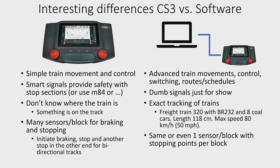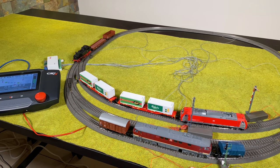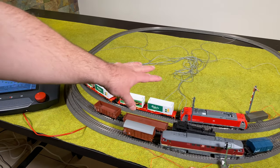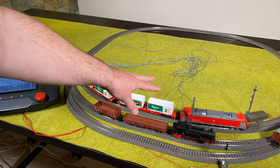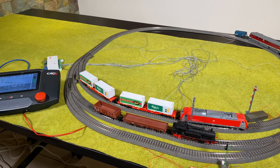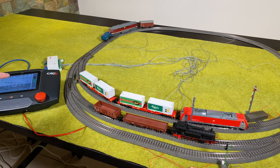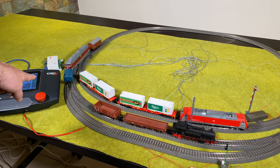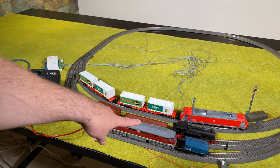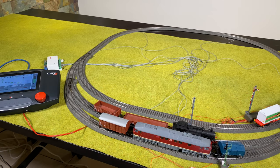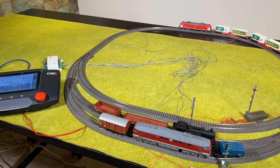So let's look at the example I have here on the table. This is a test of an automatic shadow station where you see the trains coming in and being dispatched out on the layout. To achieve this I have the Central Station 3, digital locomotives, digital signals, and digital turnouts so the Central Station can control everything and direct the trains to the correct track.